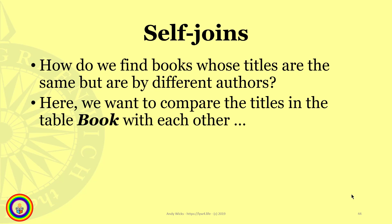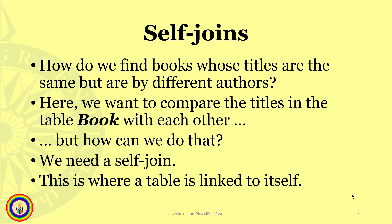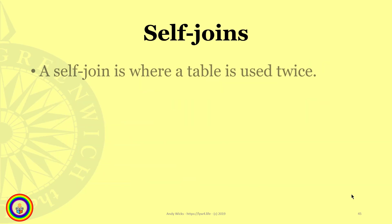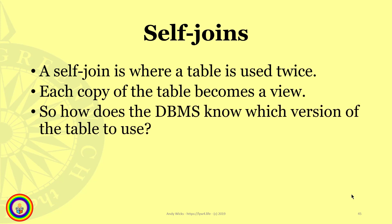Here we want to compare the titles in the table 'book' with each other, but how can we do that? We need a self join. A self join is where a table is linked to itself — where a table is used twice.